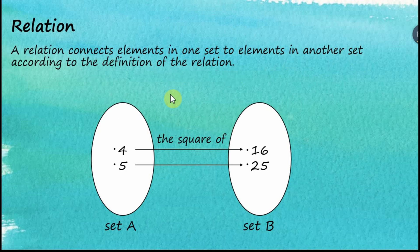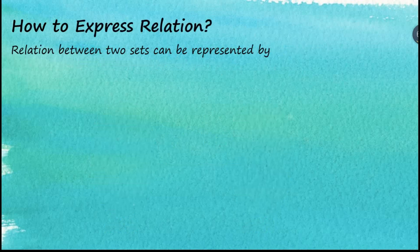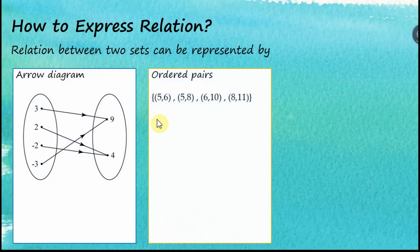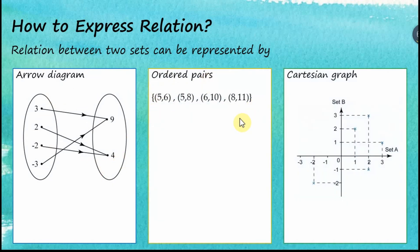In mathematics, relations between two sets can be represented by a few methods. First, an arrow diagram. Second, ordered pairs. And the third one is the Cartesian graph, which looks similar to the Cartesian coordinate system.